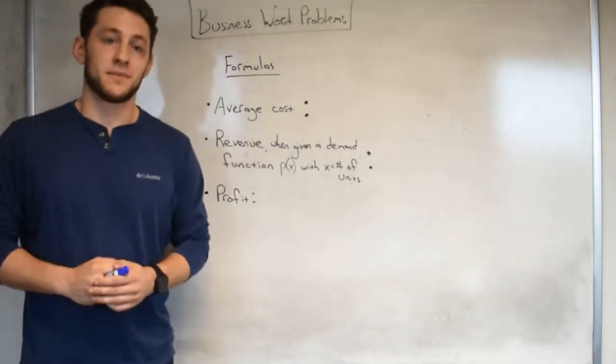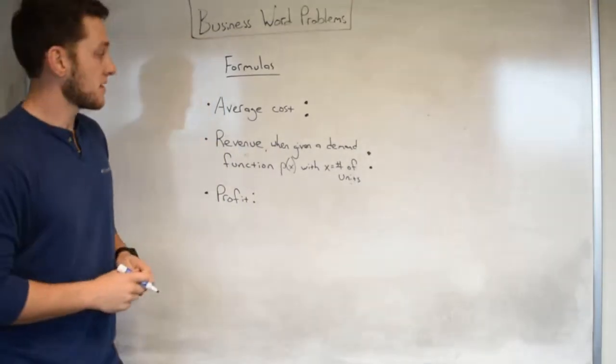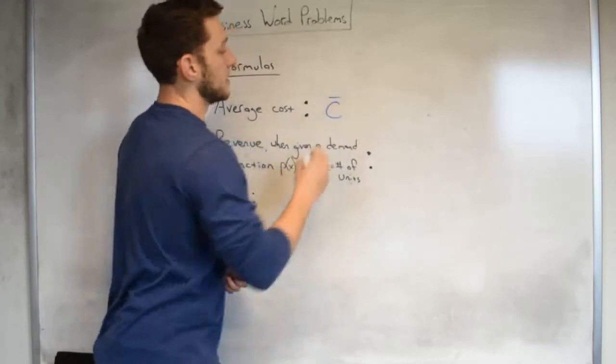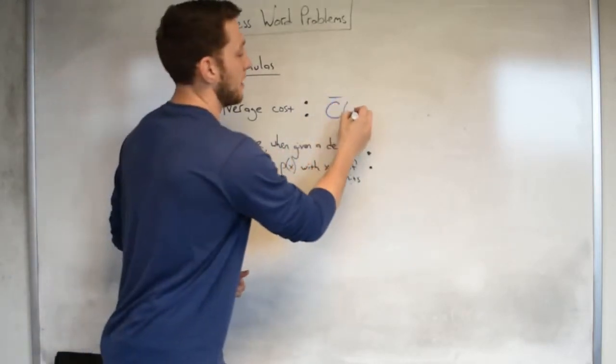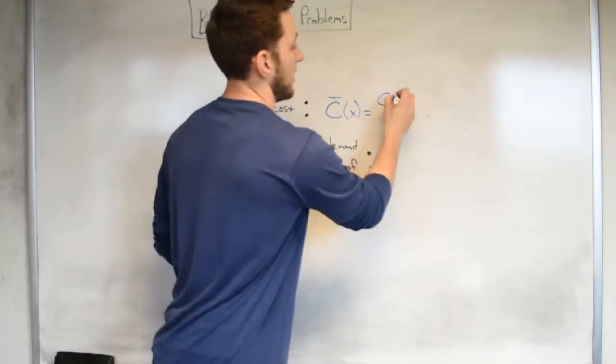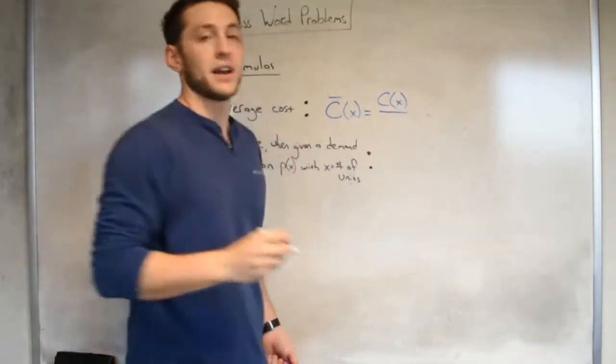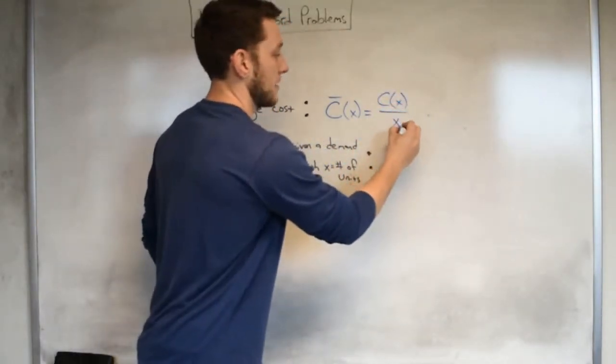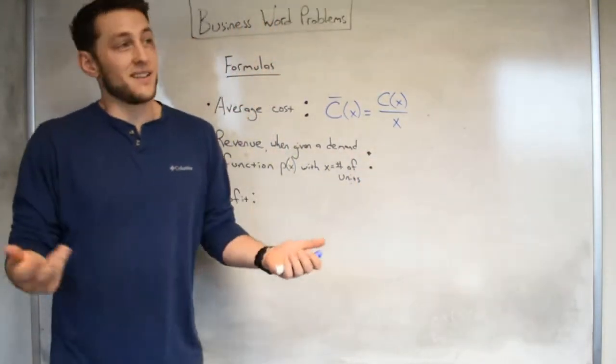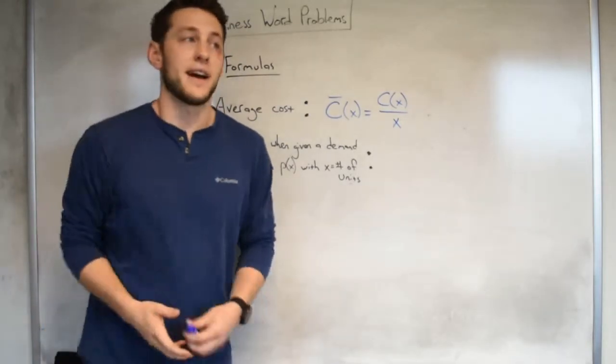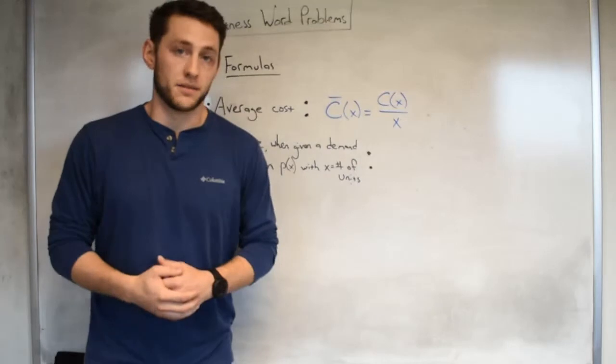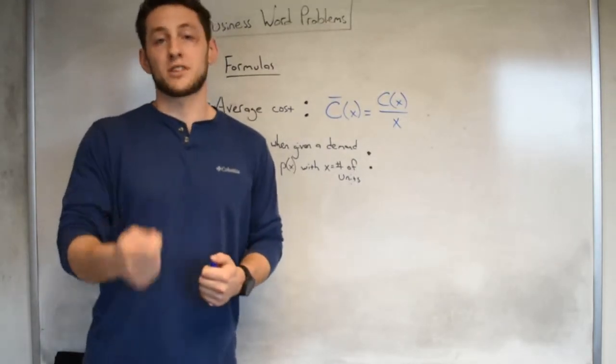Now as you may have noticed in chapter 3, in order to find a maximum and minimum we really need a function. Once we have that function, if we can take its derivative, we can apply the first or second derivative test to find the max or min. Here are some functions that are going to come up in this section. First off, average cost: if you're given a cost function C(x), we denote the average cost by C bar of x, and that's just equal to the total cost C(x) divided by the number of items x.